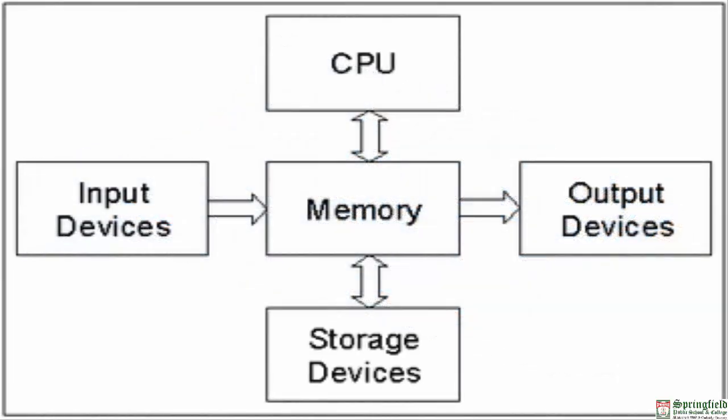The four basic operations performed by a computer are: input, processing, storage, and output. In the input operation, users enter data and instructions through a keyboard or mouse, or from a storage device such as a hard disk, CD, or USB. In the processing operation, the microprocessor processes data according to the given instructions and fetches data from memory, storing it in the instruction register.